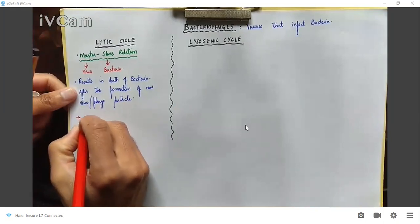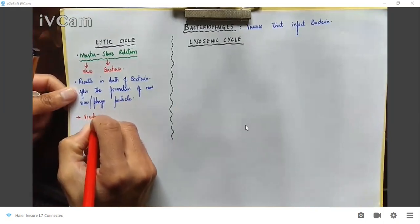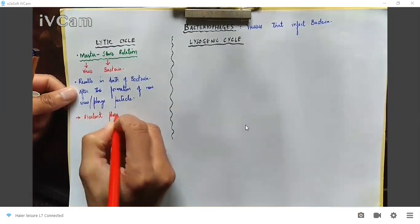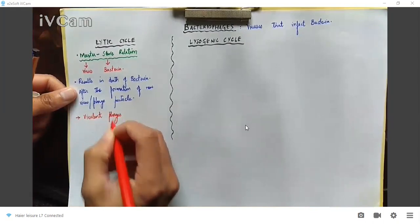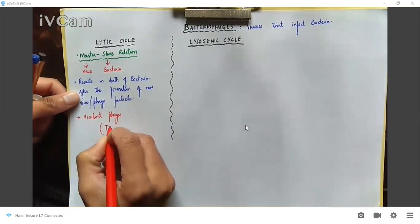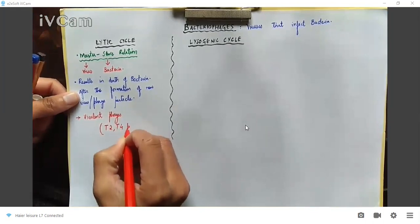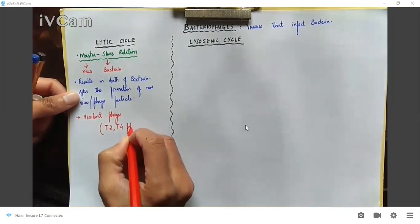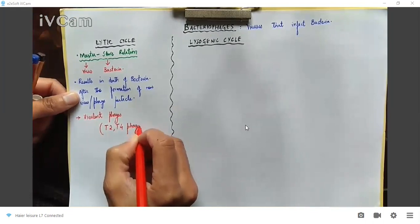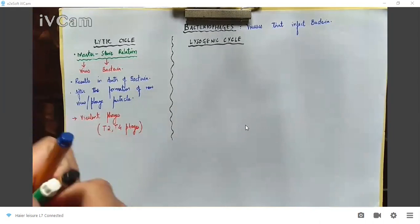The viruses that adopt the lytic cycle are called virulent phages. Examples include T2 and T4 phages. These are the phages which infect Escherichia coli, or E. coli bacteria.